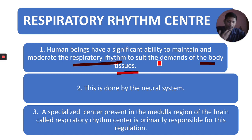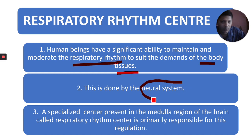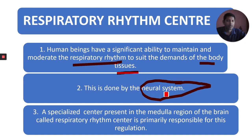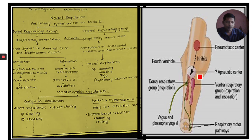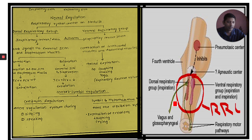The respiratory rhythm changes according to the demands of body tissues. How is this respiratory rhythm changed according to the needs of body tissues? There is a neural system — the nervous system — regulating this. A specialized center is present in the medulla region of the brain, that is the medulla oblongata, and it is called the respiratory rhythm center (RRC).